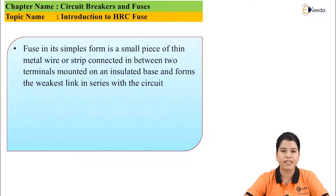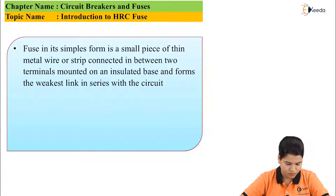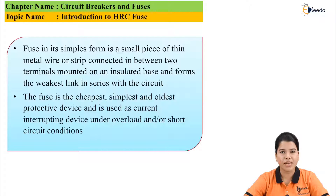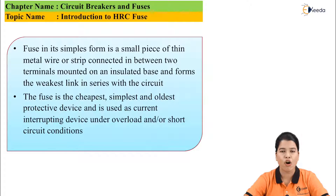A fuse is nothing but the simplest link, or the simplest wire, which is connected between two contacts and acts in series with our circuit. It is the simplest, cheapest, and oldest technique used for the protection of the system from faults, overloads, or short circuit conditions.